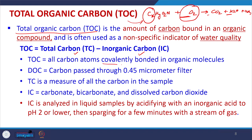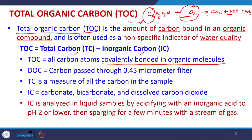TOC represents all carbon atoms covalently bonded in organic molecules. There is also DOC (dissolved organic carbon), which is the carbon passing through a 0.45 µm filter. TC measures all carbon in the sample, and IC (inorganic carbon — carbonate, bicarbonate, dissolved CO2) is analyzed by acidifying to pH 2 or lower and sparging with a gas stream. Modern TOC analyzers measure total carbon and inorganic carbon separately and report TOC by difference.